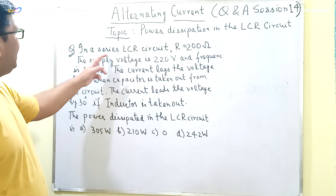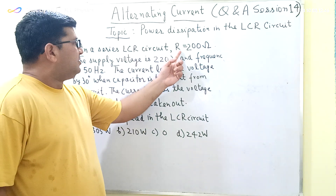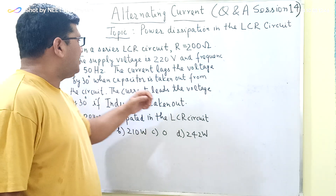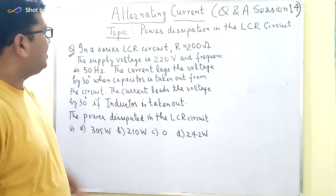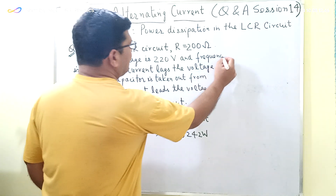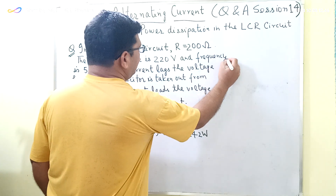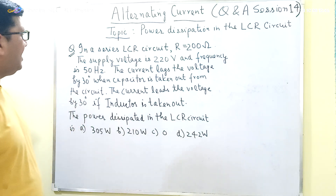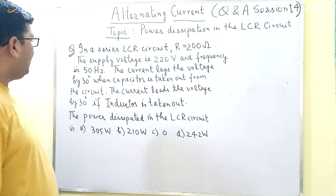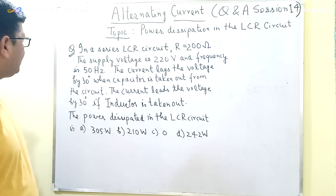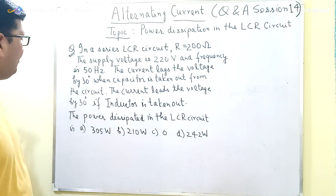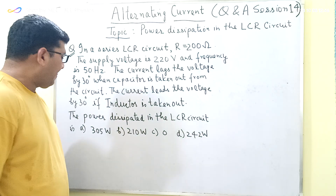The question is: in a series LCR circuit, the resistance of a resistor is equal to 200 ohms, the supply voltage is 220 volts, and the frequency is 50 Hertz. The current lags the voltage by 30 degrees when the capacitor is taken out from the circuit, and the current leads the voltage by 30 degrees if the inductor is taken out from the circuit.